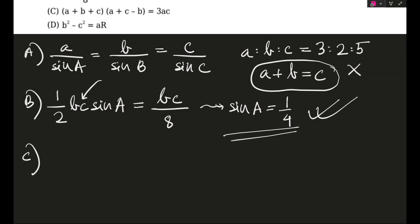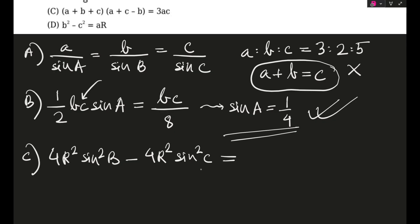Option C: (a + b + c)(a + c − b) = 3ac. This can be expanded as a² + 2ac + c² − b² = 3ac. Shifting 3ac to the left gives a² + c² − b² − ac = 0. Now a² + c² − b² is expressible via the law of cosines.